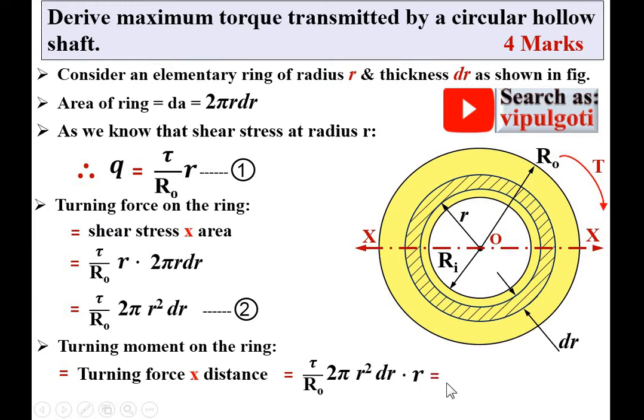After simplification, τ/Ro·2π·r³·dr. Let's say this is equation number 3.